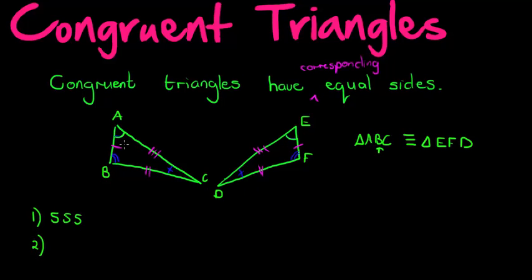If I don't have all three sides the same, I can also show that I've got two sides and an inclusive angle — then they're also congruent. For example, if I know that this angle is equal to that angle, I also need the two sides that make up that angle. An inclusive angle is the angle made by those two sides.